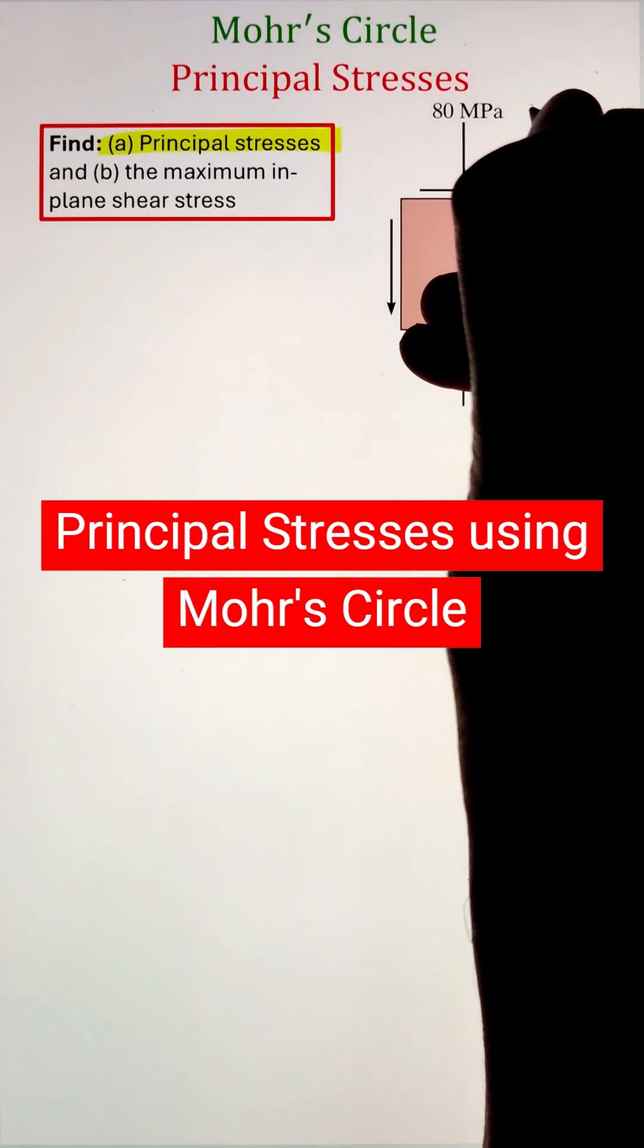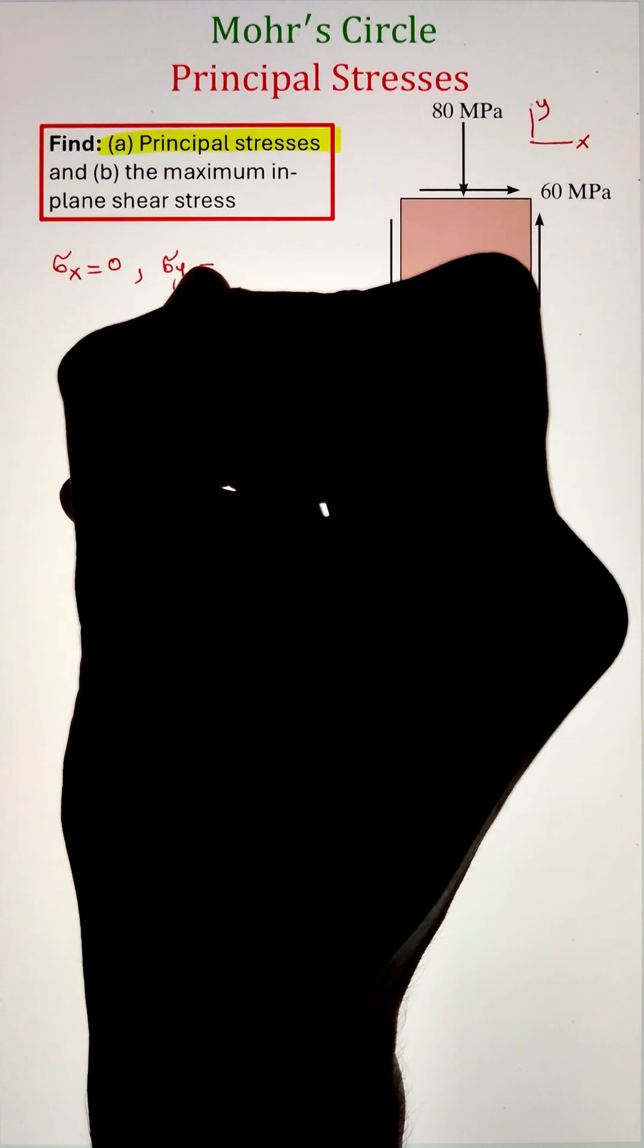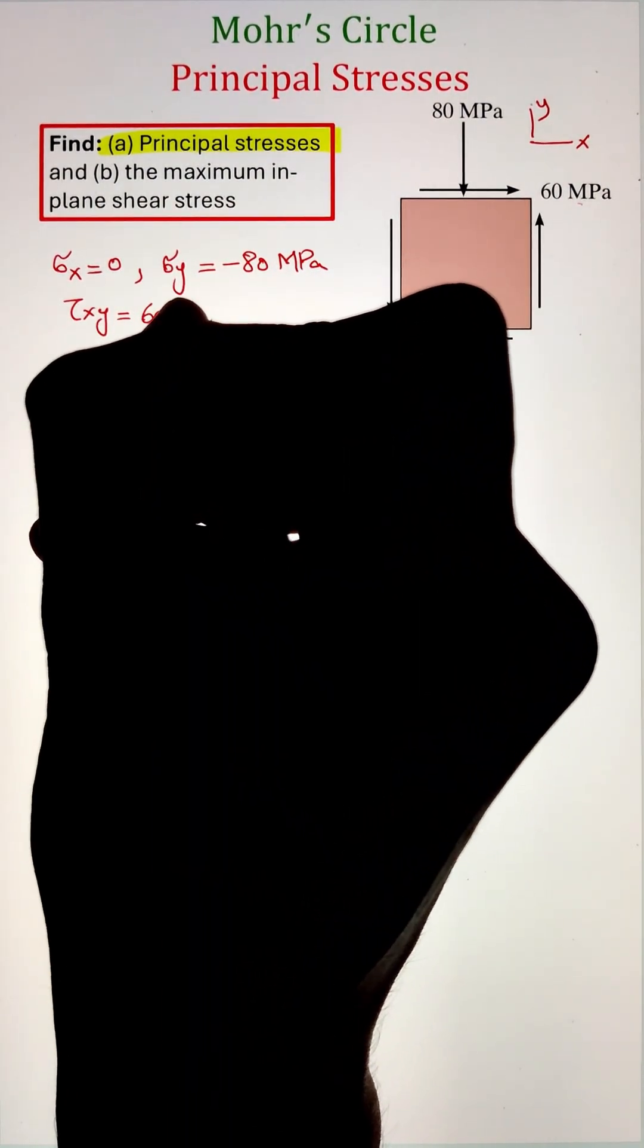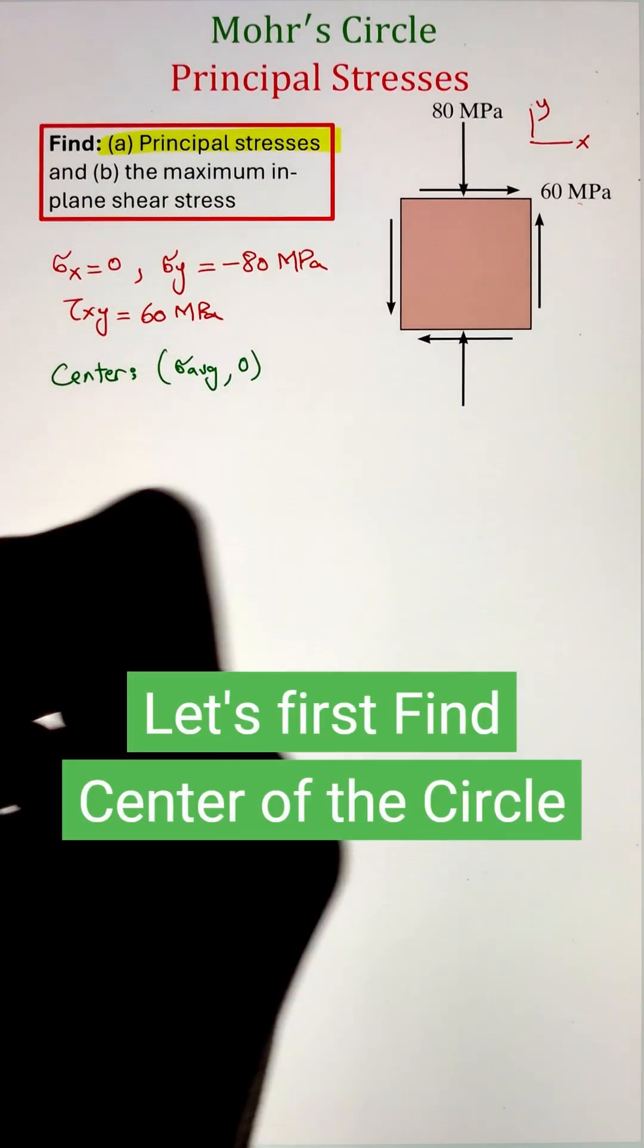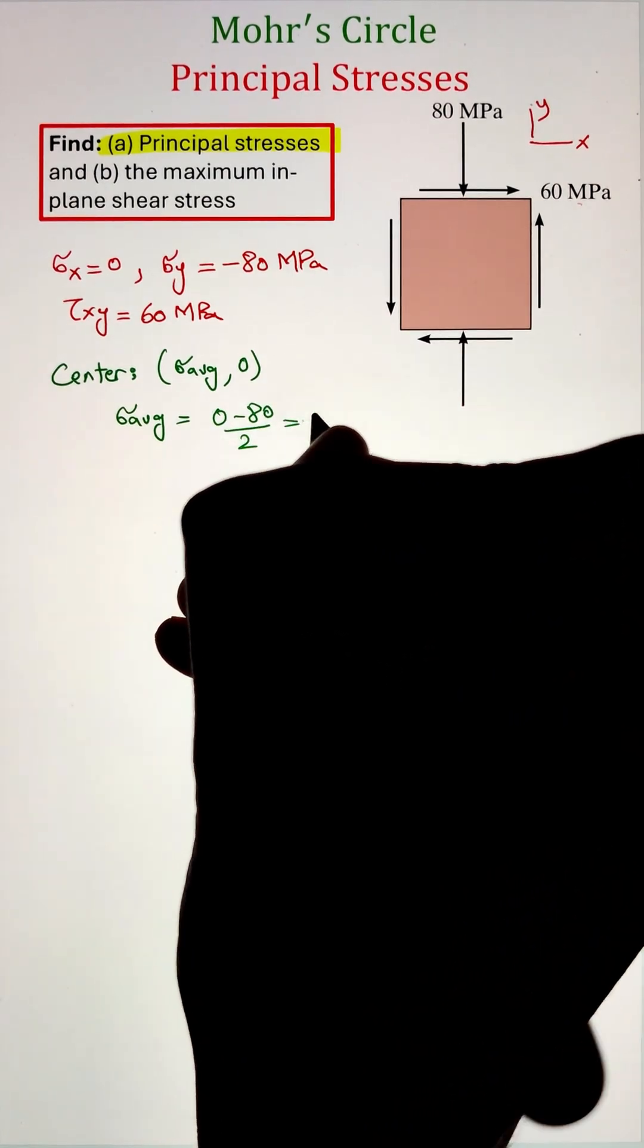In order to find the principal stresses using Mohr's circle, we first have to identify the normal and shear stresses acting on the stress element. In this case, the sigma x value is equal to 0 and sigma y is negative 80 megapascal as it is in the compressive load, whereas our shear stress is 60 megapascal in the positive as it is pointing upward on the right-hand side.